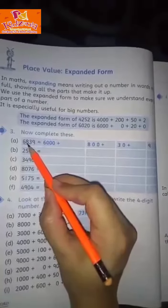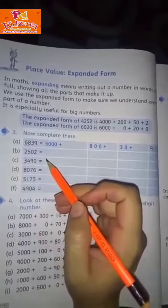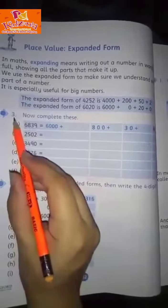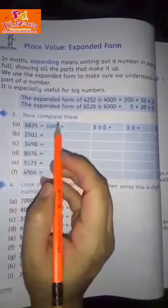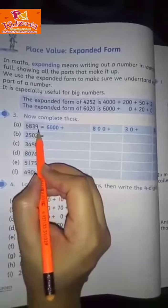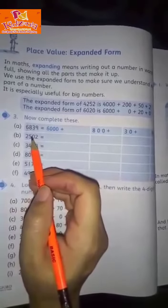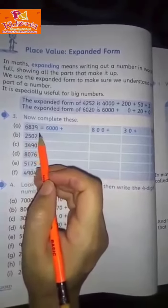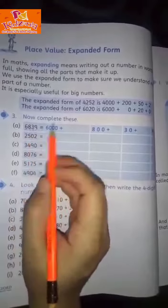Question number 3: Here are some numbers. For example, part a: 6,839. First, we must show and we need to understand how to find the value of a number.